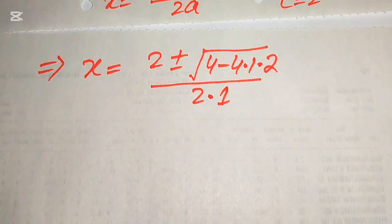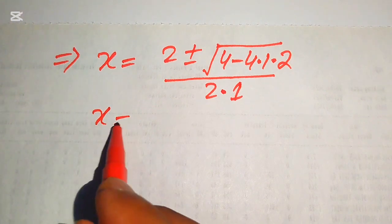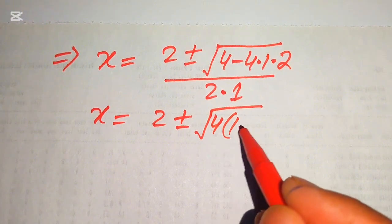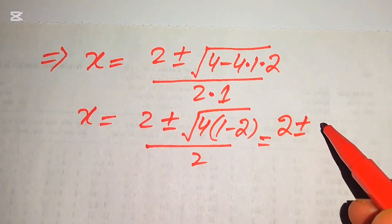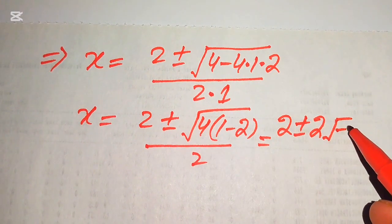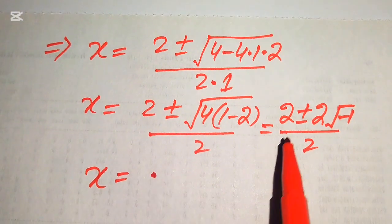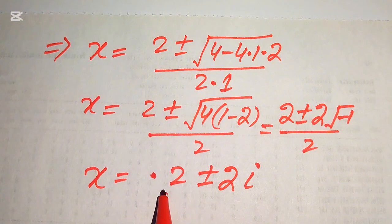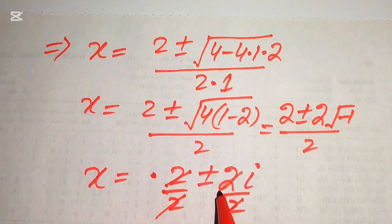Simplifying further: x equals 2 plus or minus square root of 4 times (1 minus 2), divided by 2. This gives x equals 2 plus or minus the square root of 4 becomes 2, times square root of minus 1. Breaking the fraction, the 2s cancel, and we get x equals 1 plus or minus i. These are the first two complex roots from equation number 1.